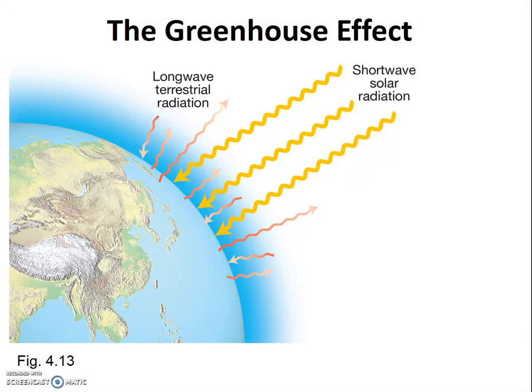I'm going to start by simply reading the caption from figure 4.13 in your textbook. It does a good job of explaining the basics of the greenhouse effect. It says: the atmosphere easily transmits shortwave radiation from the Sun, but is a poor transmitter of outgoing longwave radiation emitted by the Earth's surface. This differential transmission of shortwave and longwave radiation causes the greenhouse effect in the atmosphere.